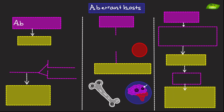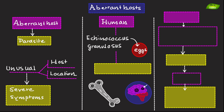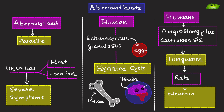Aberrant hosts are those in which a parasite infects an unusual location or unusual host species, leading to severe or atypical symptoms. For example, ingesting Echinococcus granulosus eggs can lead to humans developing hydatid cysts in atypical locations such as the brain or bones. A second example is humans for Angiostrongylus cantonensis — this rat lungworm usually infects rats but can cause severe neurological symptoms in humans who become an aberrant host.